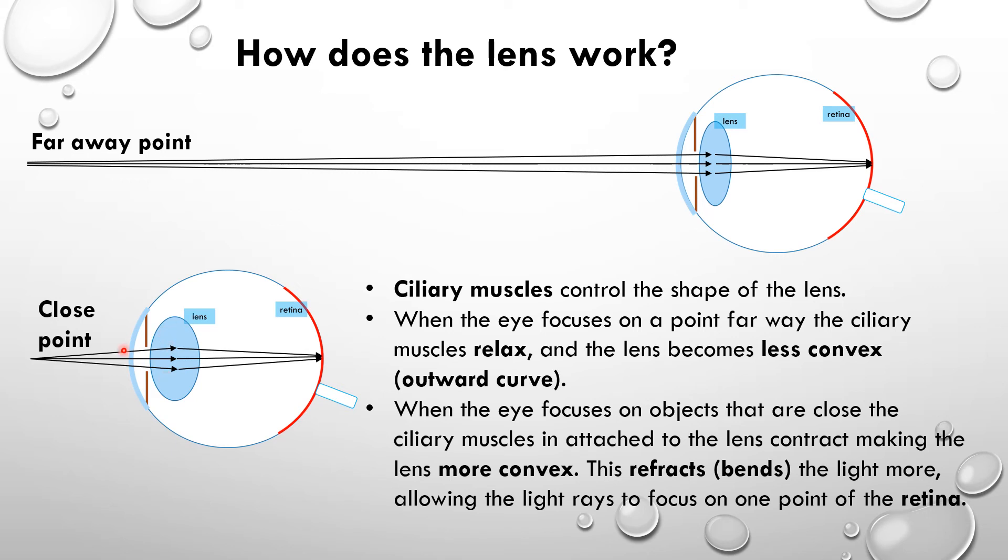And the reason they do that is when the light rays come in, they are moving away from each other, they're diverging, and they have to be bent back again to focus on the back of the retina. They have to be bent more, so the lens has to be more curved. So that's what we have to do when we look at a close object.